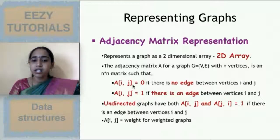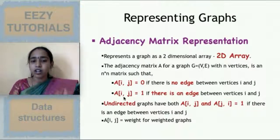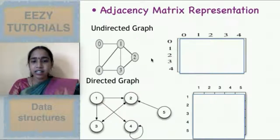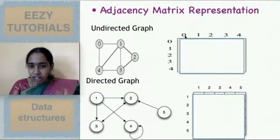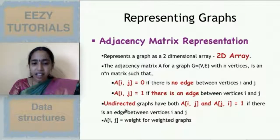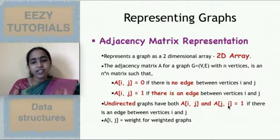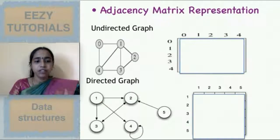So a[i][j] equals 0 if there is no edge, and if an edge is present you have to mark a[i][j] as 1, meaning the intersection point of i and j. If there is an edge between vertices 0 and 1, both a[0][1] and a[1][0] will be 1, because in an undirected graph a[i][j] and a[j][i] will both equal 1.